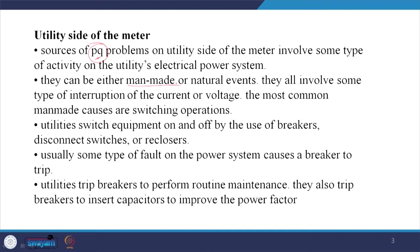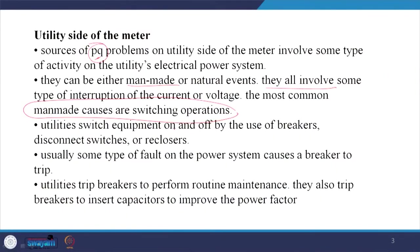These problems can be either manmade or natural events, and they all involve some interruption of current or voltage. The most common manmade causes are switching operations that we see in day-to-day life: switching of capacitors, switching of FACTS devices such as TCSC, and all those devices. Utilities switch equipment on and off using breakers, and if there is a fault, the breaker will operate, causing high voltage in the system.